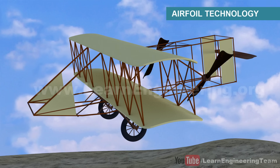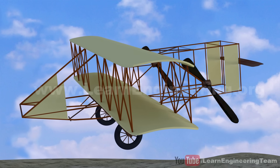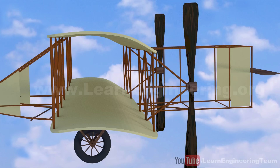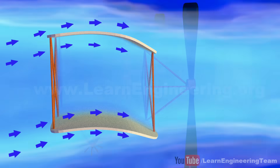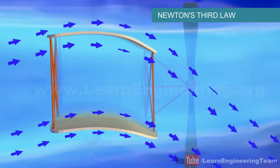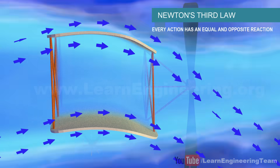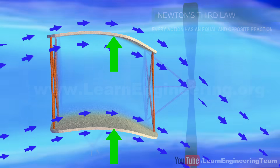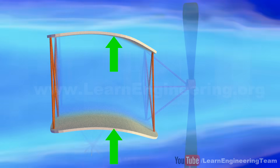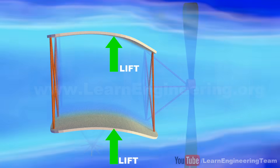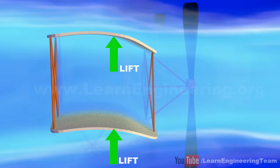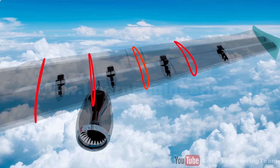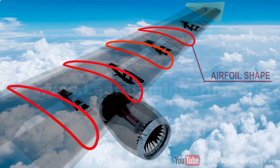The wing of their aircraft was able to produce a lift force in an ingenious way. The wings had a curved shape, which pushes the gushing air downwards. Newton's third law of motion comes into picture here: if the wing pushes the air downwards, the air should also push the wing in the opposite direction with equal magnitude. This results in the lift force, allowing the aircraft to fly. Even today, airplanes make use of the same airfoil technology, but with a highly aerodynamically optimized airfoil shape.